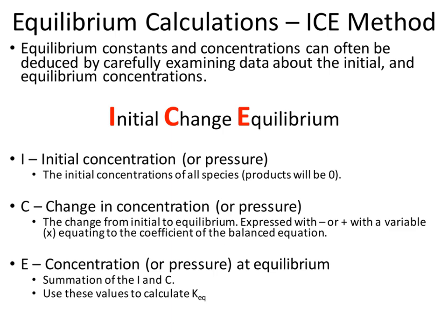As a recall, we're going to be using ICE tables to figure out equilibrium concentrations. ICE stands for initial, change, and equilibrium. Initial means our initial concentrations — or partial pressures for gases — when the reaction hasn't started, so we'll probably have zero concentration for products unless otherwise stated. Change is that change between going from our initial to our equilibrium point. The equilibrium concentrations are just a summation of the initial plus whatever the change was.